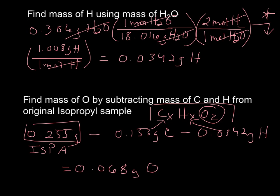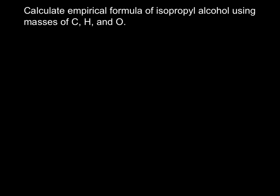And now we're pretty much home free at this point. We take our masses for the carbon, the hydrogen, and oxygen, and we can use them to calculate the empirical formula. Now we've done this before. So for carbon, it would be taking that 0.153 grams and using it to figure out the whole number of coefficients, the whole number of multiples. Let's do that.